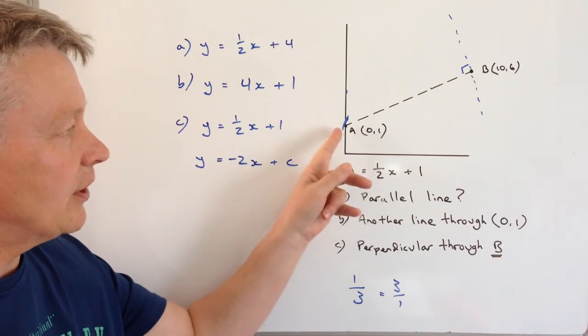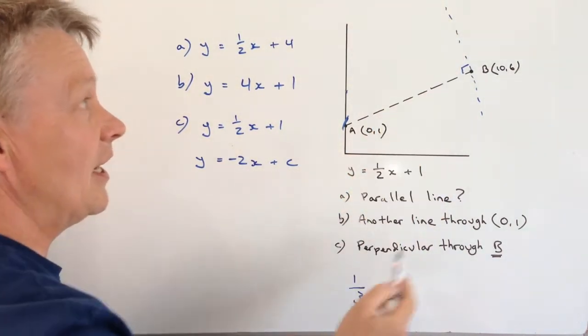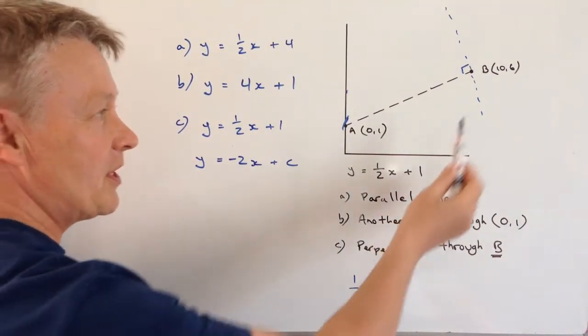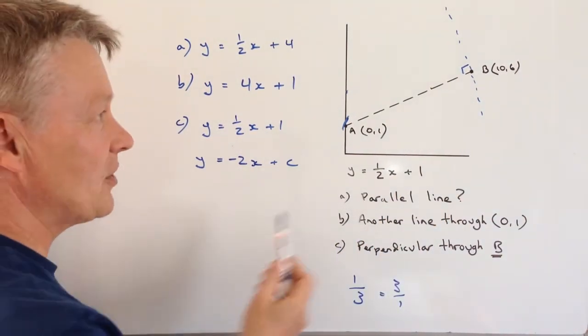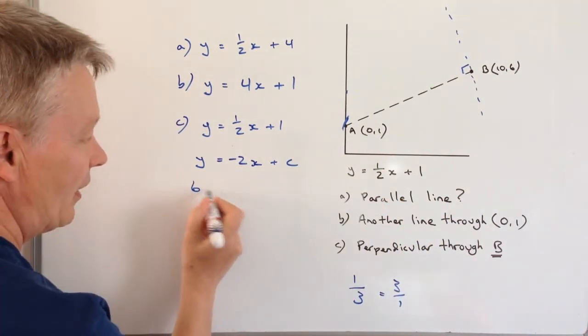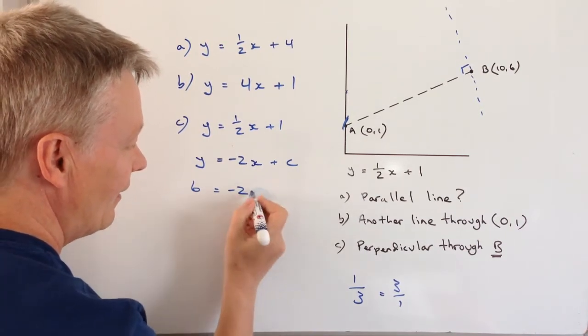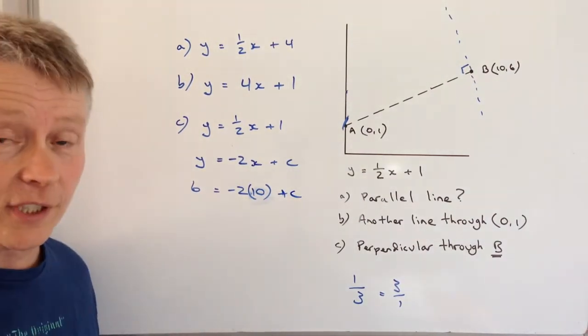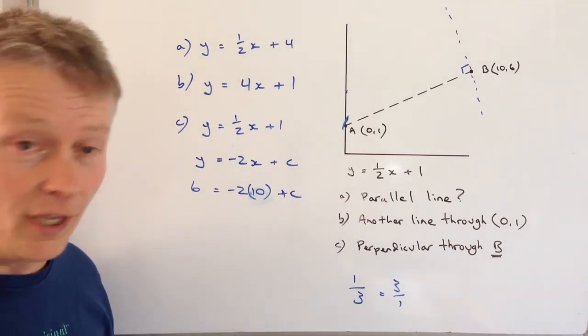Now before when we knew that it crossed at one we don't know where this line is going to cross. It's going to be somewhere up there but we're not quite sure where it is. So what we do is we take these coordinates and we plug them into this. So we know the value of x is 10 and the value of y is 6. So I can simply write 6 equals minus two times 10 plus c. And that will then if we calculate that will give us the value of c and then we can write the full equation of the line.